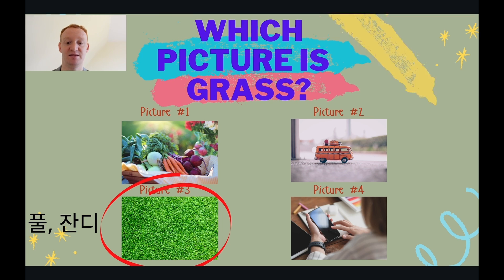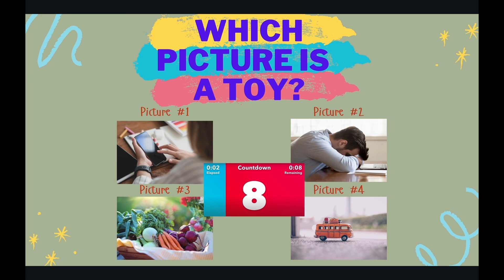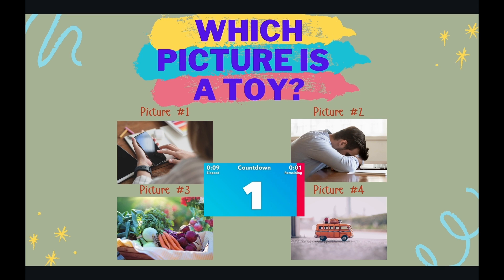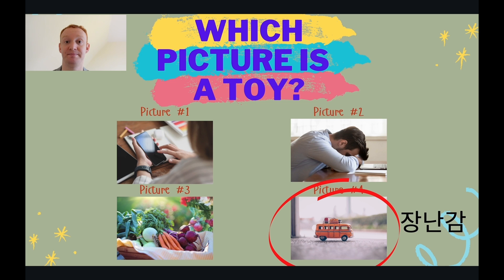Let's have a look at our next question. Which picture is a toy? You have ten seconds. The answer is picture four is a toy. This toy is a car. This toy car is orange. This toy car is very small.